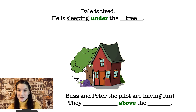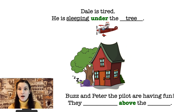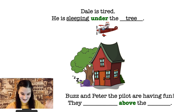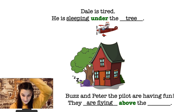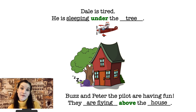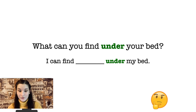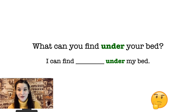Now let's look at this picture. What characters can you see now? We can see Peter the pilot again and we can see Buzz. Buzz and Peter the pilot are having fun. What are they doing? They are flying — above the house, or above the house and the tree. Now pause the video and read the sentences yourself. And I have a question for you: what can you find under your bed? For example, I can find a sock under my bed. What can you find under your bed? Pause the video and write one sentence in your copy books.